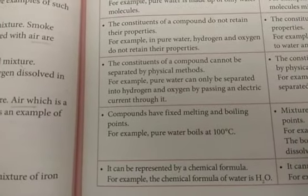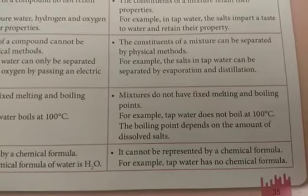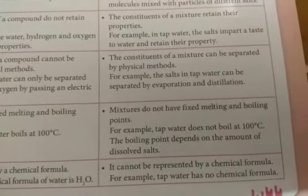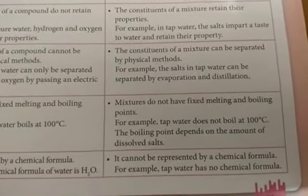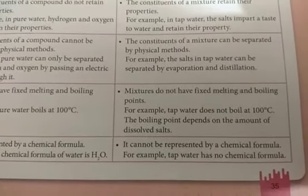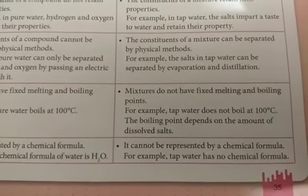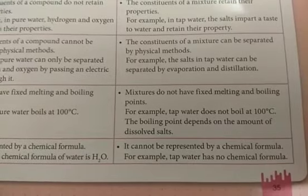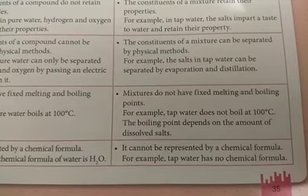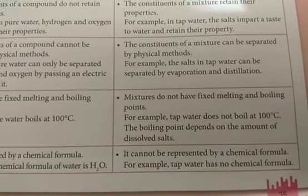Compounds have fixed melting and boiling points. For example, pure water boils at 100 degrees Celsius. Mixtures do not have fixed melting or boiling points. For example, tap water does not boil at 100 degrees Celsius — the boiling point depends on the amount of dissolved salts. A pure water sample boils at 100°C, but after adding salt or sugar, it will not boil at the same temperature.